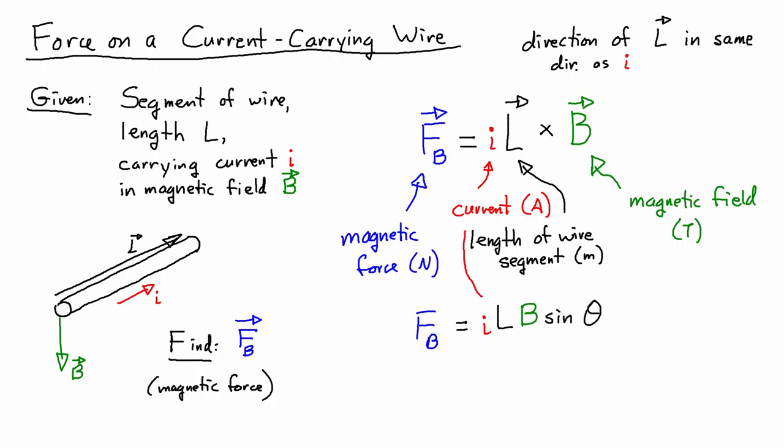And again, I is the current, L is the length of the wire segment, B is the magnetic field, and F_B is the magnetic force.